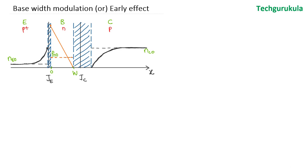I've taken the PNP transistor in the active region of operation, and here the minority carrier distribution is shown for reference. At this point of operation of this BJT, there is some voltage applied across the collector junction, at which we have a depletion width — let's call this number 1. We know that the depletion width depends on the voltage applied across the PN junction.